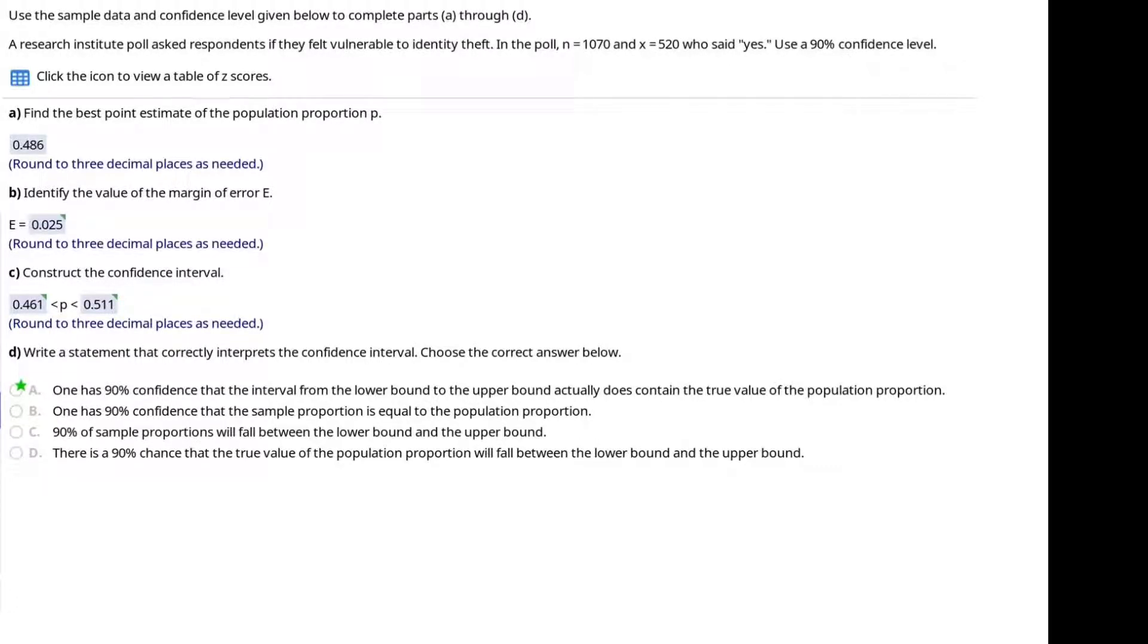Use the sample data and confidence level given below to complete parts A through D. A research institute poll asked respondents if they felt vulnerable to identity theft. In the poll, the sample size was 1,070 and the number who responded yes was 520. Use a 90% confidence level.